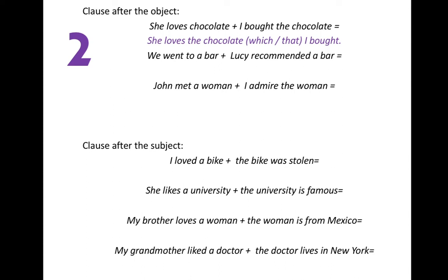The relative pronoun is optional because it is replacing the object of the verb in the relative clause. Let's see the second example: 'We went to a bar' and 'Lucy recommended a bar.' Connecting them: 'We went to a bar which Lucy recommended.' We use 'which' to replace the object of the verb. Lucy recommended a bar — so 'we went to a bar Lucy recommended' or 'we went to a bar that Lucy recommended.' The relative pronoun is optional.